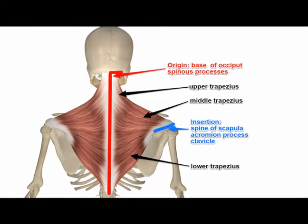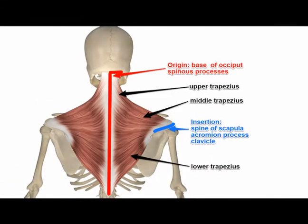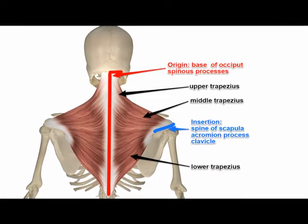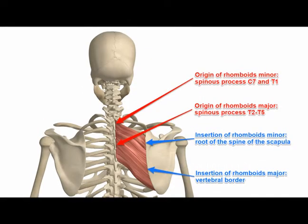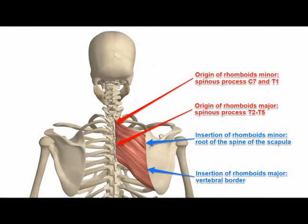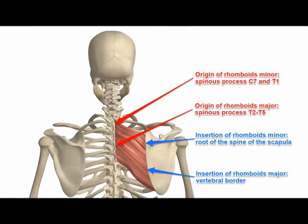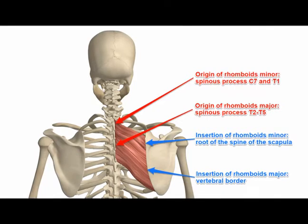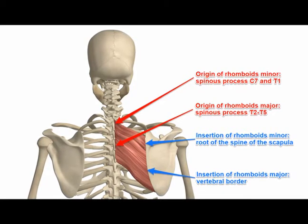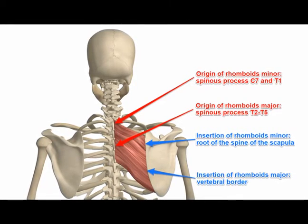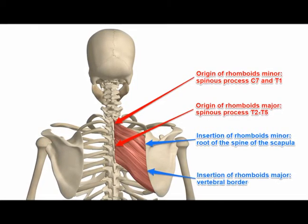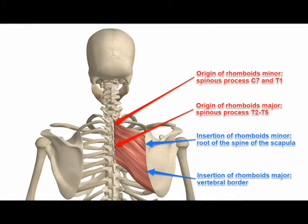Scapular retraction is when the scapula is moved closer to the spine. Concentric actions of the middle trapezius, the lower trapezius, the rhomboid major, and the rhomboid minor are the source of scapular retraction.